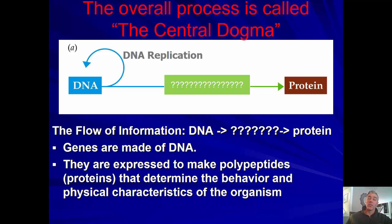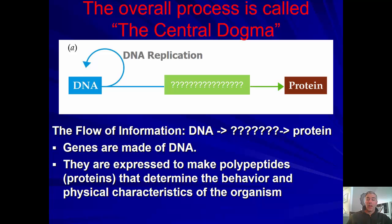The overall process of going from DNA to protein is called the central dogma of molecular biology. A gene is essentially a sequence of DNA that codes for an individual protein — it's the recipe, one recipe for making a protein. Genes are expressed or turned on and they make polypeptides, which are long sequences made of amino acids.